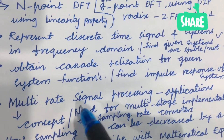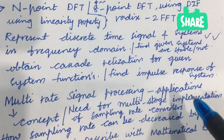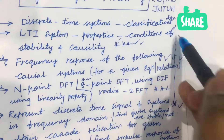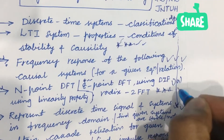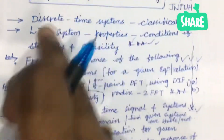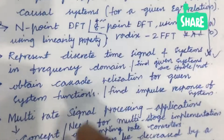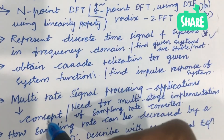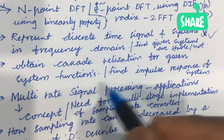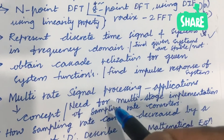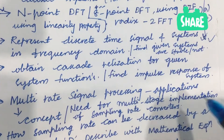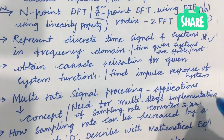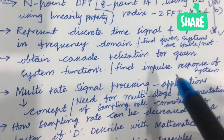Later, multi-rate signal processing and its applications — from this area you may be getting one question, covering one part A and one part B, as the course is very lengthy in its structure. The multi-rate signal processing and its applications, as well as the concept of MRSP and the need for multi-stage implementation of sampling rate converters, is also one of the gunshot questions. From this concept, you will be getting one question for sure.